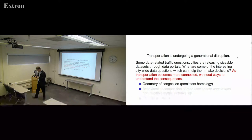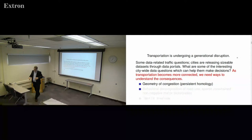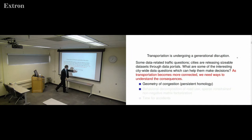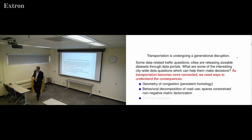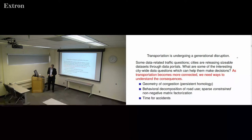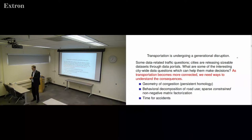I'm going to talk about three things. First, the geometry of congestion — I got interested in thinking about traffic jams but in large citywide ways, using mathematics from topological data analysis. Second, behavioral decomposition of road use, using matrix factorization. Third, I'm going to talk about time for accidents — looking at the trade-off between trip time and accidents. The goal is to bring in mathematical tools to understand large-scale traffic behavior.